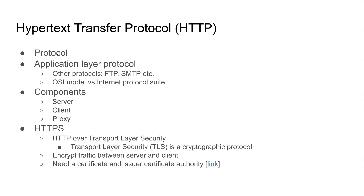To recap: HTTP is a protocol — specifically an application layer protocol. It consists of an HTTP server and a client, and proxies may also be involved. In the real world, we should use HTTPS, which is HTTP over TLS — Transport Layer Security at layer 4. You can get a certificate from a provider like Let's Encrypt for free, or use other paid providers. HTTPS guarantees that the server is totally secure and no one can read your data.